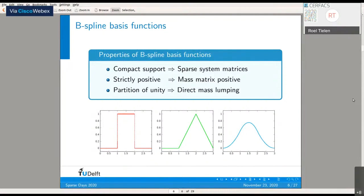Finally, they possess the partition of unity property, which means that if we want to lump a mass matrix, we can do this within the variational form. These last two properties, the strict positiveness and partition of unity property, we will use later in this presentation.